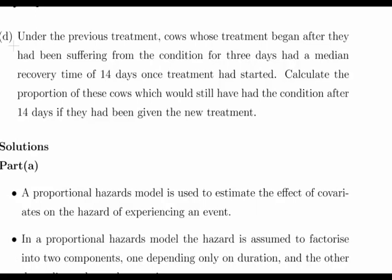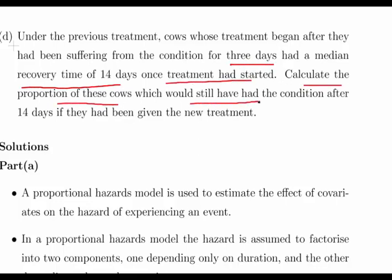Part D is: under the previous treatment, cows whose treatment began after they had been suffering from the condition for three days had a median recovery time of 14 days once treatment started. Calculate the proportion of these cows that would still have had the condition after 14 days if they had the new treatment.